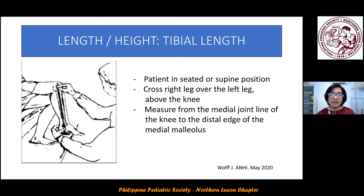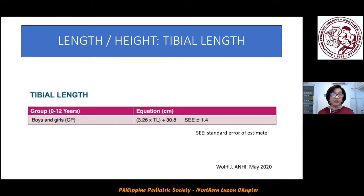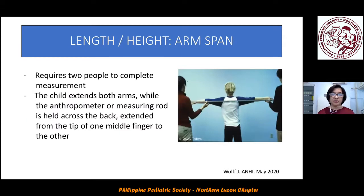Another alternate height measurement is tibial length. The patient can be seated or supine, but this time the right leg crosses over the left leg just above the knee. Measure from the medial joint line of the knee to the distal edge of the medial malleolus. Using the corresponding formula, that value is what you plot on the growth chart.